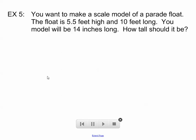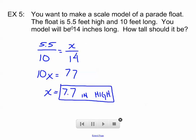Here's another one, staying with the parade theme. You want to make a scale model of a parade float. The float is 5.5 feet high and 10 feet long. Your model will be 14 inches long. How tall should it be, keeping it to scale? Okay, let's go with the ratio they give me. 5.5 feet high for every 10 feet long. That would equal X feet high for 14 inches long. Cross-products, 5.5 times 14 is 77, just like 10 times X is 10X. So the height of my model should be 7.7, and remember your dimensions. The model, we're talking about inches. So 7.7 inches high.